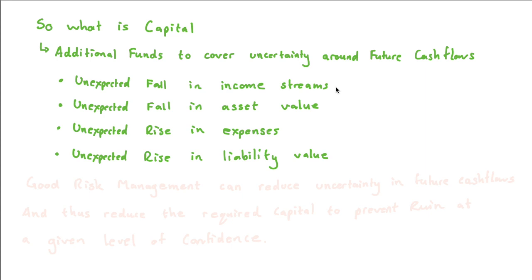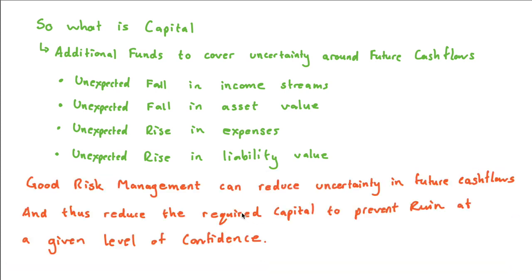It's also important to see how capital management links in with risk management. Capital management is the most basic form of risk management — you just hold more capital and you have less chance of ruin. But there are also other risk management strategies one can deploy that reduce uncertainty in future cash flows, from transferring risk to implementing policies and procedures and internal controls. At the end of the day, what they're aiming to do is reduce the required capital needed to prevent ruin at a given level of confidence.